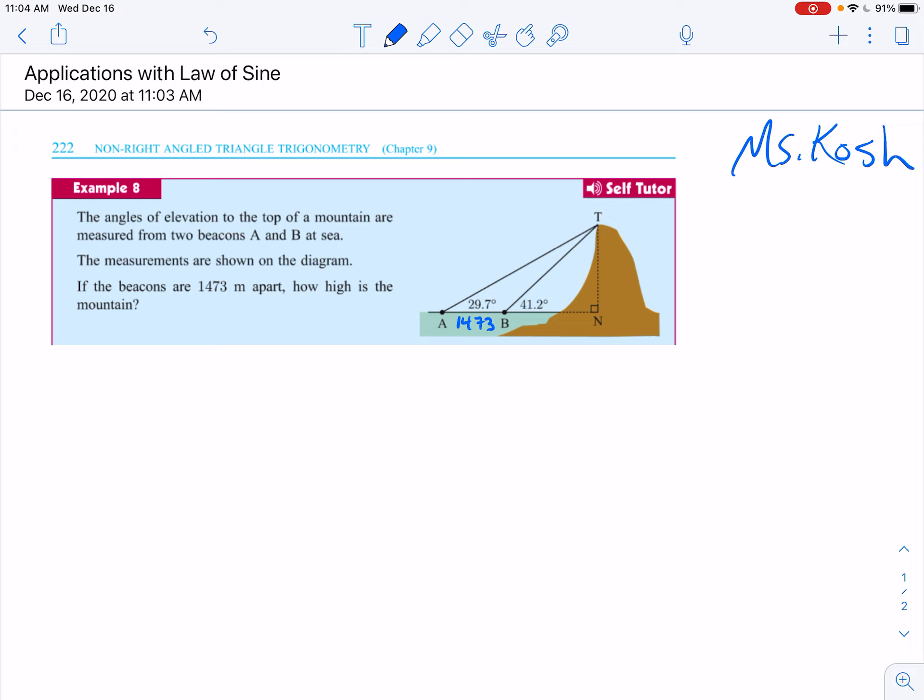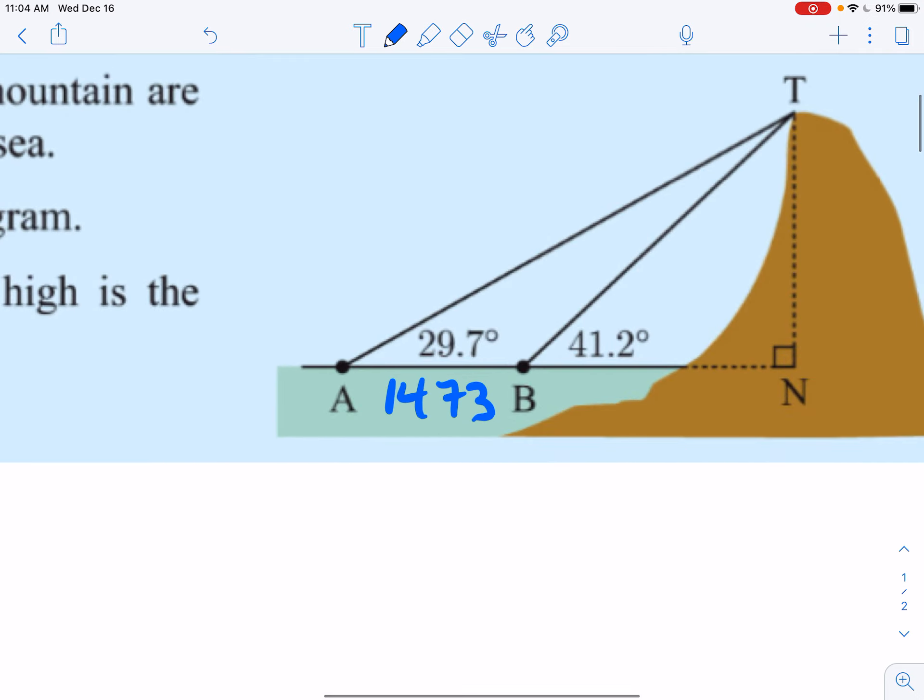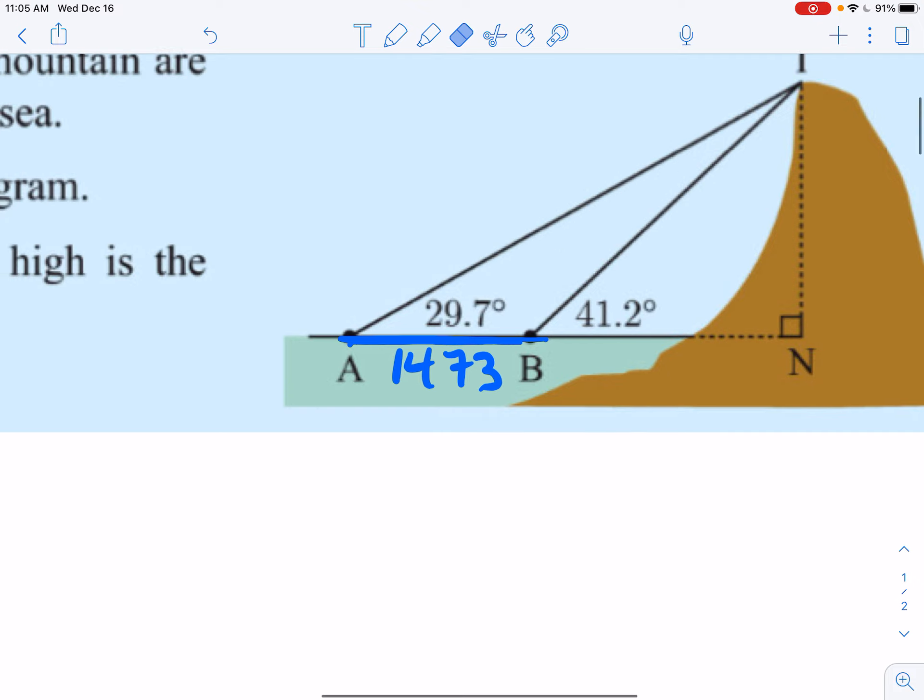Okay, so what do we know here? Well, first of all, we know this length, and we don't know anything in the right triangle. We know an angle in the right triangle, but that's all we know. So, we need to do a little bit more work to figure out a couple things before our goal is to find this H. That's our ultimate goal. So, let's see what we can do to get there.